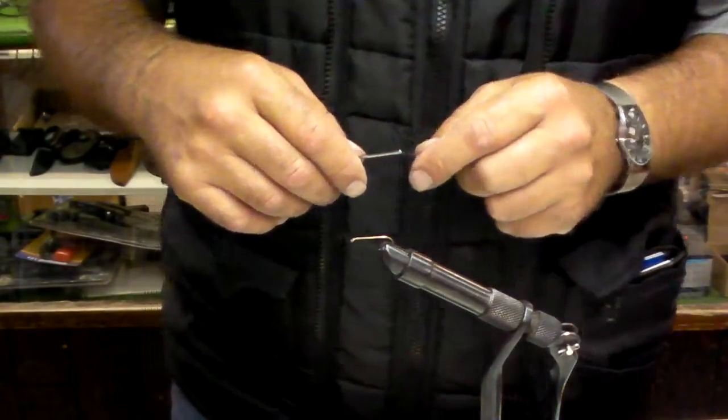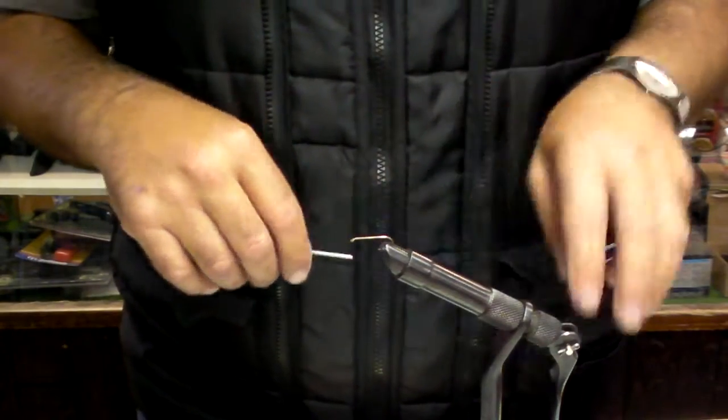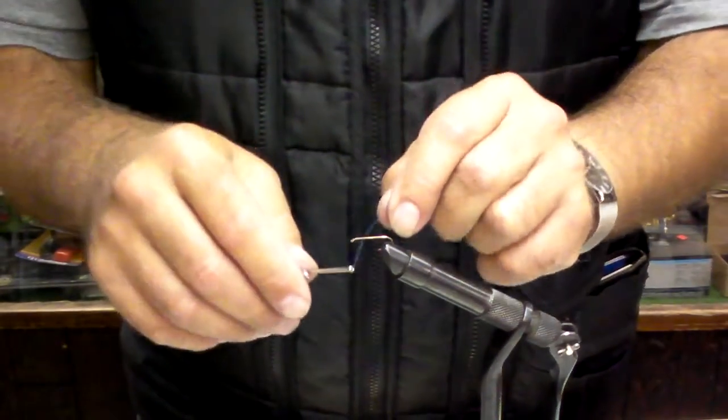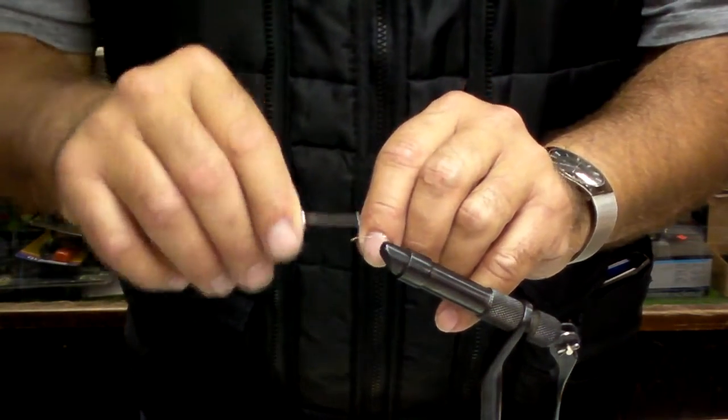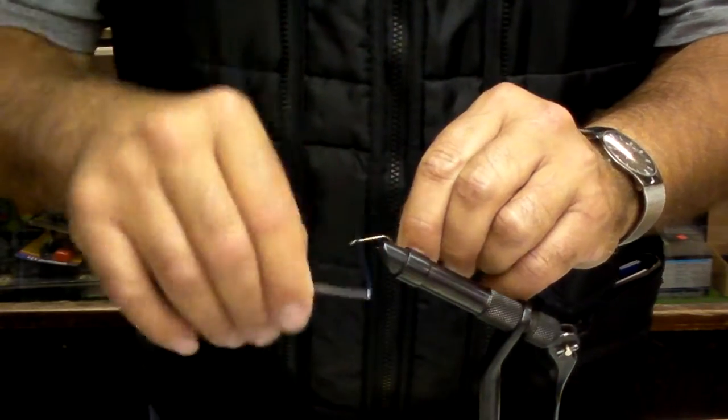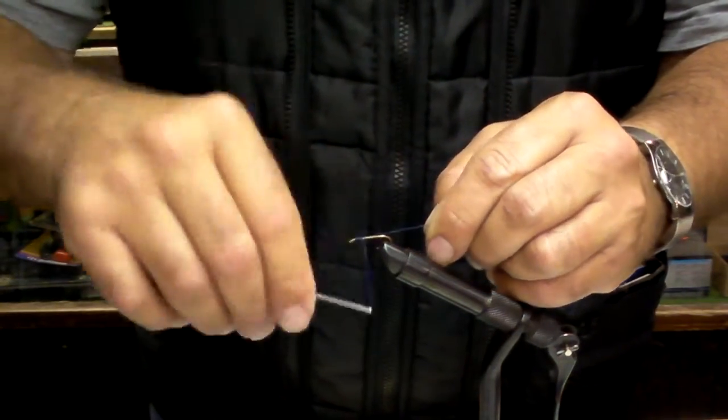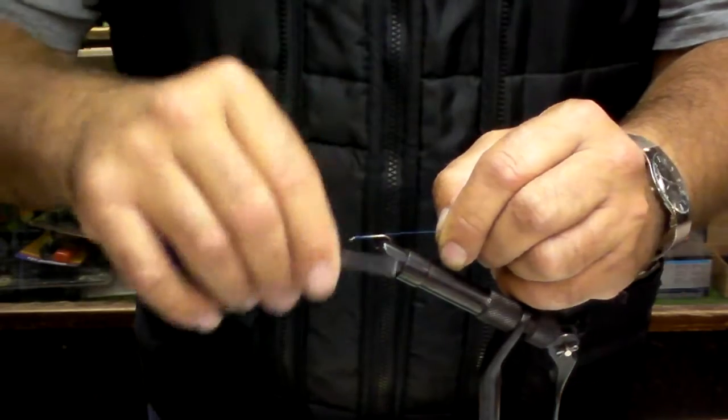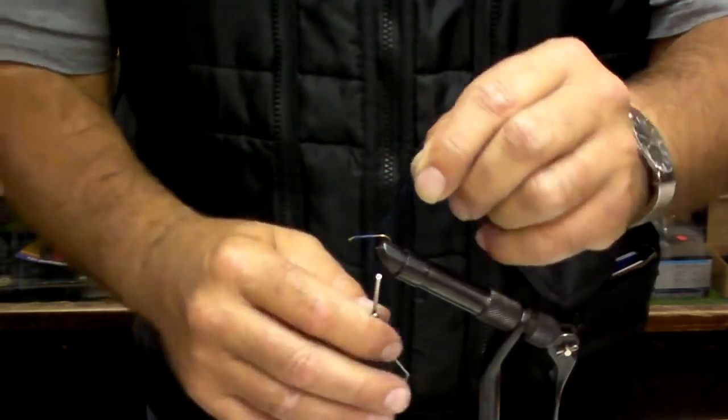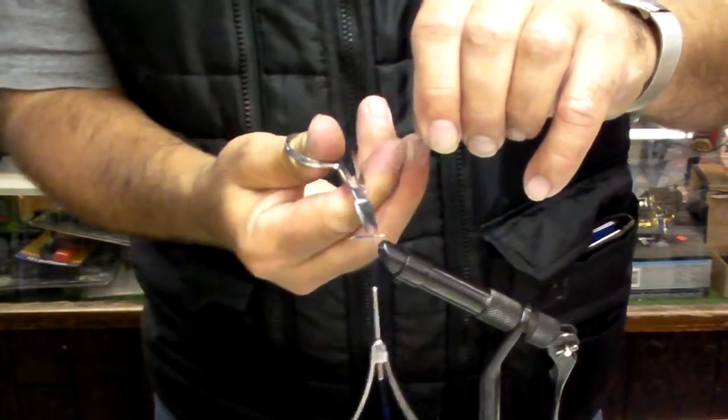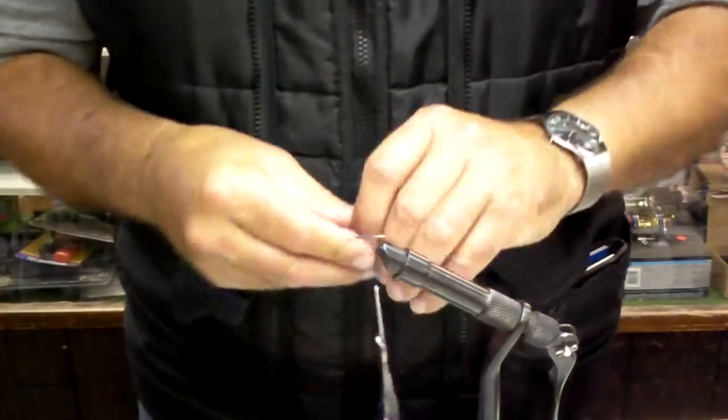I'm going to tie on some thread on a size 10 dry fly hook for an extended body damsel. I'm wrapping the thread and taking this about halfway down the shank of the hook. We're not going to use the back half, and I'm going to introduce the body of the fly up to this point.